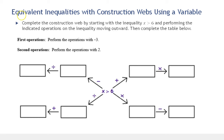In this video we're going to create equivalent inequalities with construction webs using a variable. Let's read the directions: complete the construction web by starting with the inequality x is greater than 6 and performing the indicated operations on the inequality moving outward. Then complete the table below, which is on your packet and on our next slide.